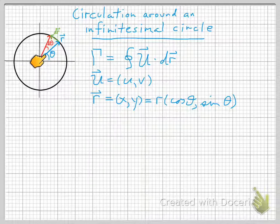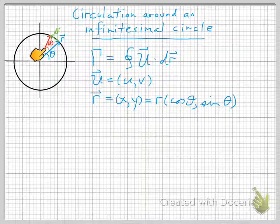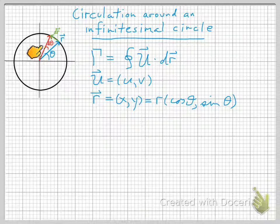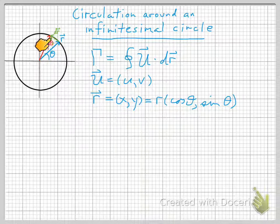So here's our circle with the position vector r. The position vector r is at an angle theta from the x-axis. And as we move the position by an increment dr, the little green vector, we increase the angle theta by an increment d theta.